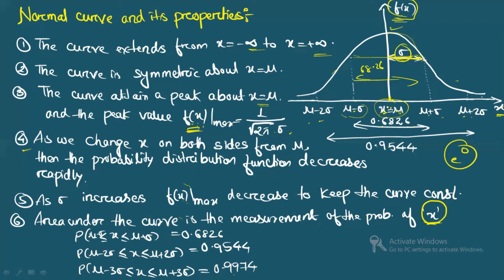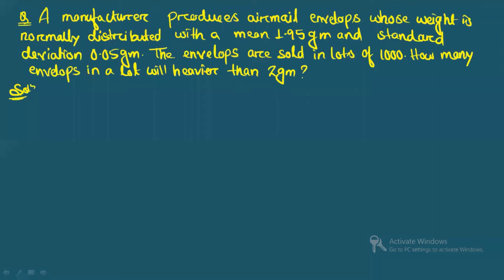Problem 1: A manufacturer produces airmail envelopes whose weight is normally distributed with mean μ = 1.95 g and standard deviation σ = 0.05 g. The envelopes are sold in lots of 1000. How many envelopes in a lot will be heavier than 2 g?